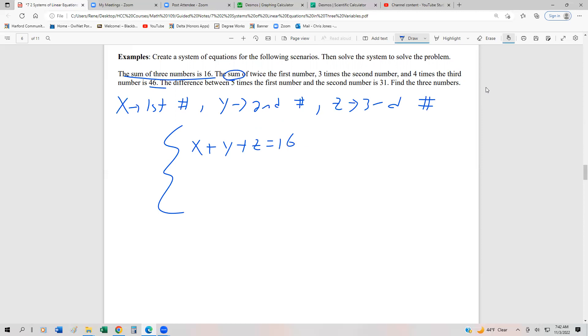The sum adding twice the first, three times the second, four times the third is 46. Finally, the difference, so difference being subtract, five times the first and the second number is 31. So there's our system right there. So actually, it's not too difficult of a system to construct for us.